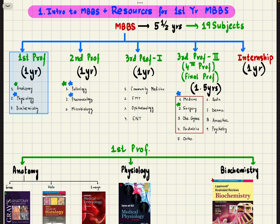In third prof part one, you have four subjects: community medicine, FMT, ophthalmology and ENT. In third prof part two, also known as fourth prof or final prof, it's of one and a half year duration.